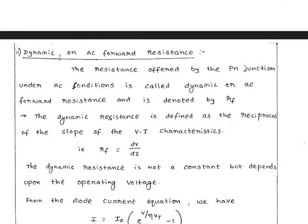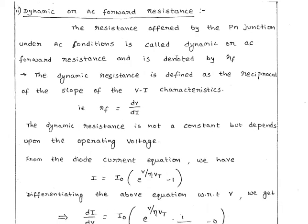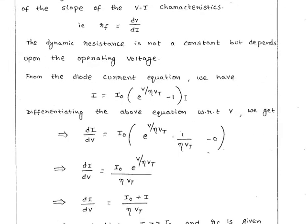Now let's look at dynamic resistance, or AC resistance, in forward bias. In forward bias, the AC conditions will be provided by the VI characteristics. The current through the diode is given by: I = I₀ · (e^(V/ηVT) − 1).